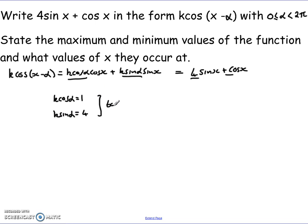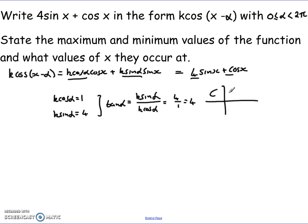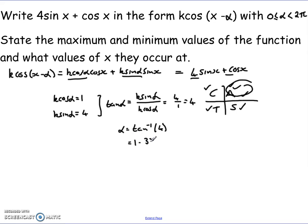Using those, we can find tan α, because tan α equals k sin α over k cos α, which in this case is 4 over 1, which is 4. To calculate α, we use our CAST diagram. Cosine is positive, sine is positive, and tan is positive — all three are positive in the first quadrant, so α must be there. We simply do tan⁻¹(4), which gives us 1.326 radians to three decimal places.